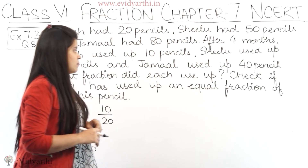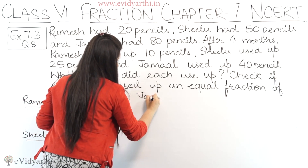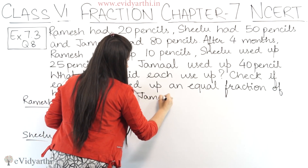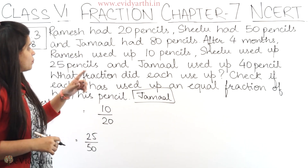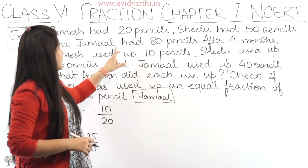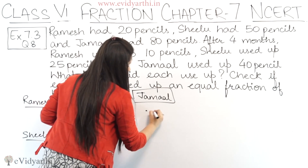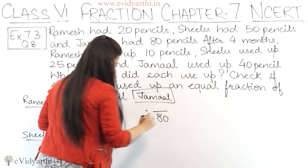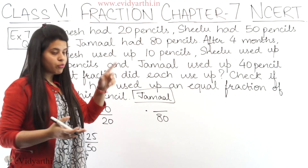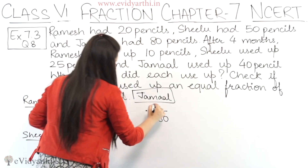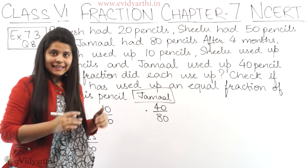Next we have Jamal. Jamal had a total of 80 pencils, so the denominator is 80. From those 80 pencils, Jamal used 40 pencils. So the fraction is 40 upon 80.